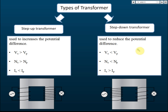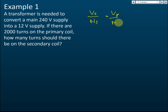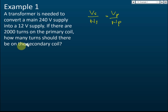Make sure you really understand this because it may be asked in a test or exam. Example one — the formula is Vs/Ns = Vp/Np. A transformer is needed to convert a mains 240-volt supply to 12 volts. If there are 2000 turns on the primary coil, how many turns should there be on the secondary coil?